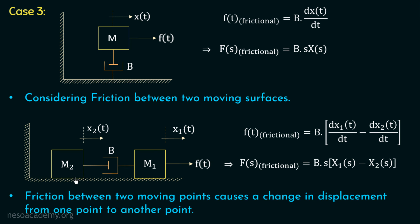Friction between two moving points causes a change in displacement from one point to another. The displacement in m1 is x1 of t, but due to the presence of friction between the two systems, the displacement in m2 is x2 of t. In these three cases, we analyzed the changes in displacement and forces due to the presence of a rigid connection, a spring, and friction between two bodies.